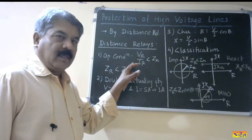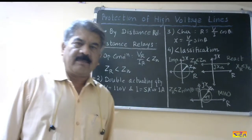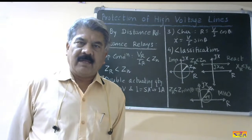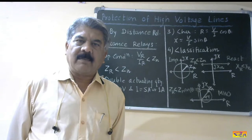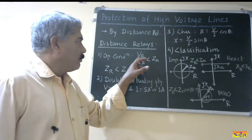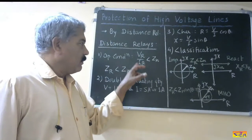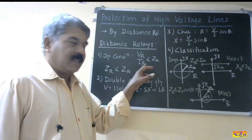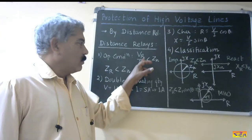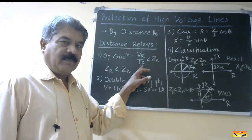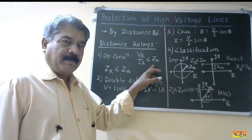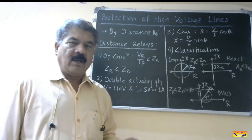The first point is regarding the operating condition of the distance relays. The definition is: these are relays which operate when the ratio of voltage measured by the relay and current through the relay falls below a certain predetermined value. So the operating condition is Vr upon Ir should be less than Zn. V upon I is a measure of impedance, so if this ratio of voltage measured by the relay and current through the relay is less than the impedance setting of the relay, then the relay operates.